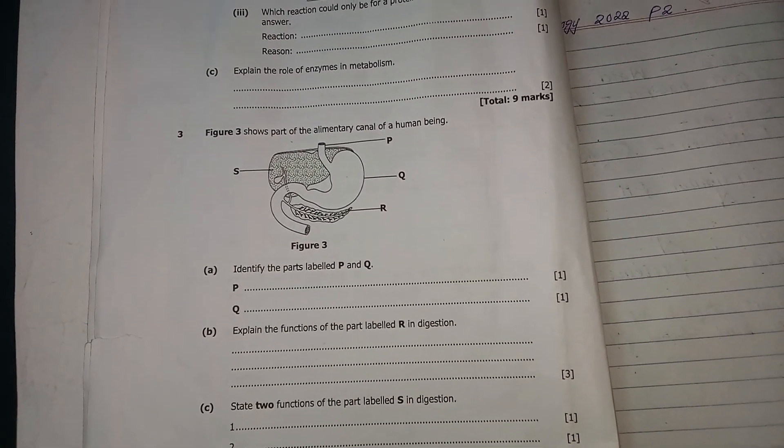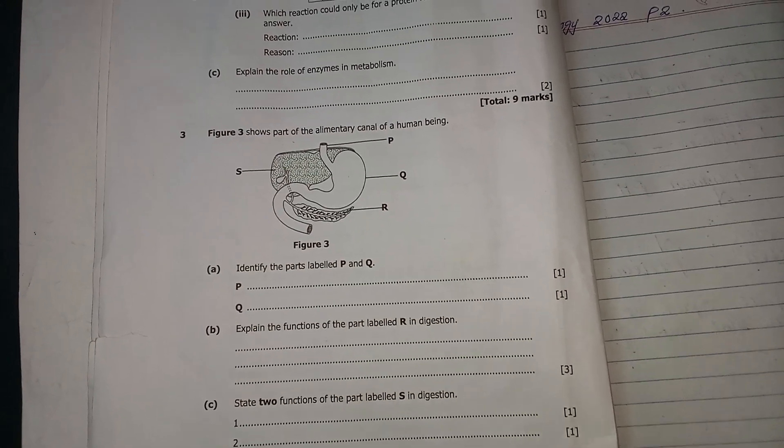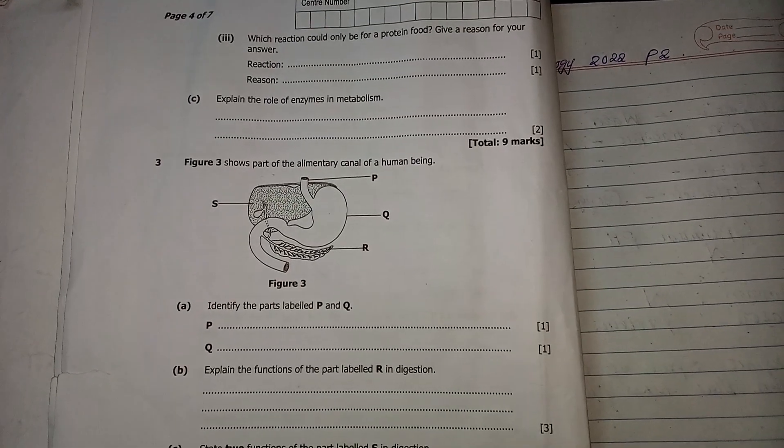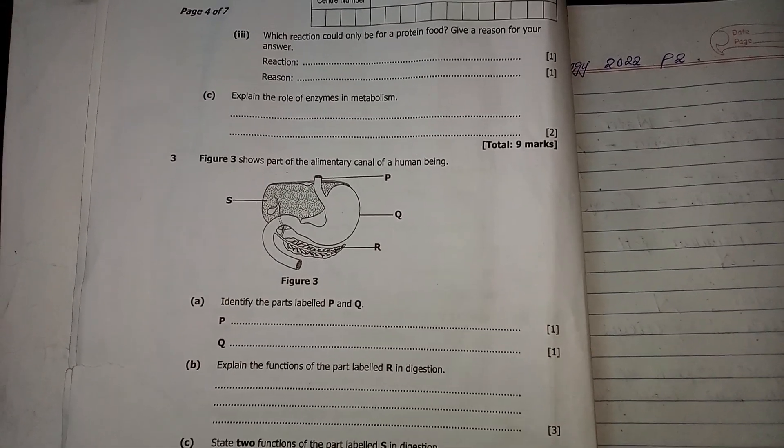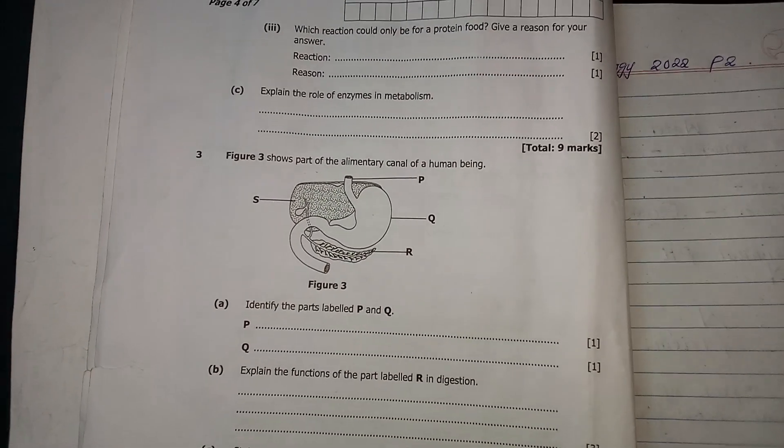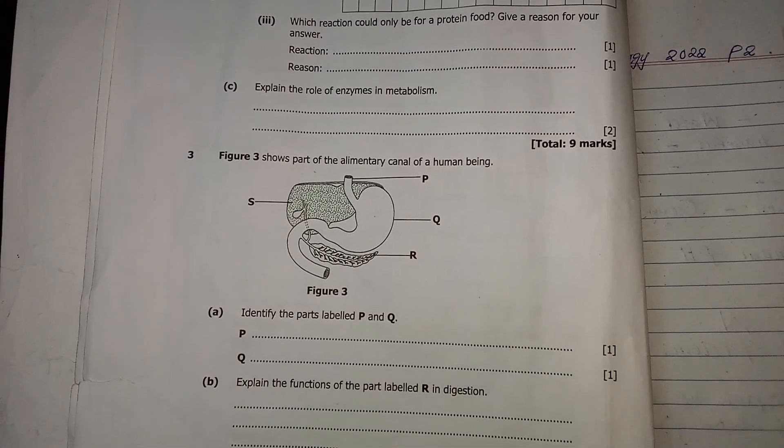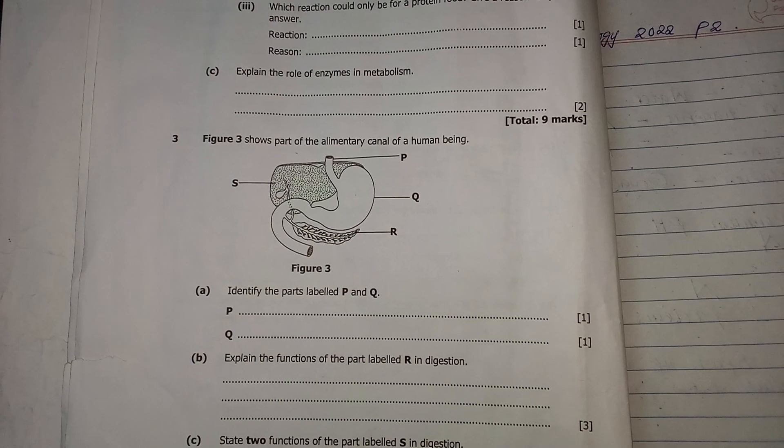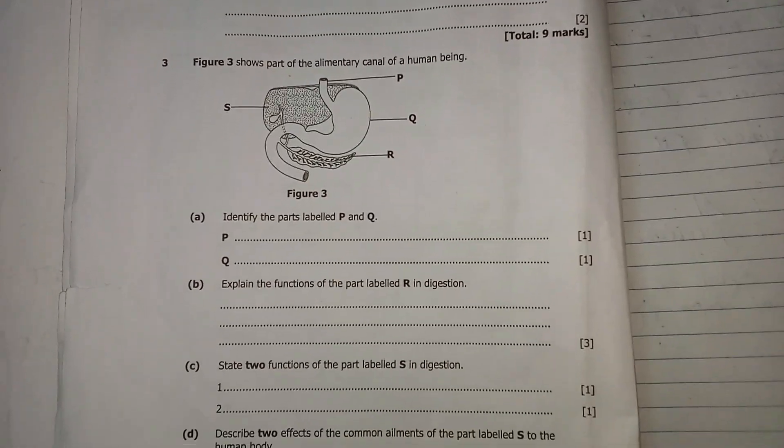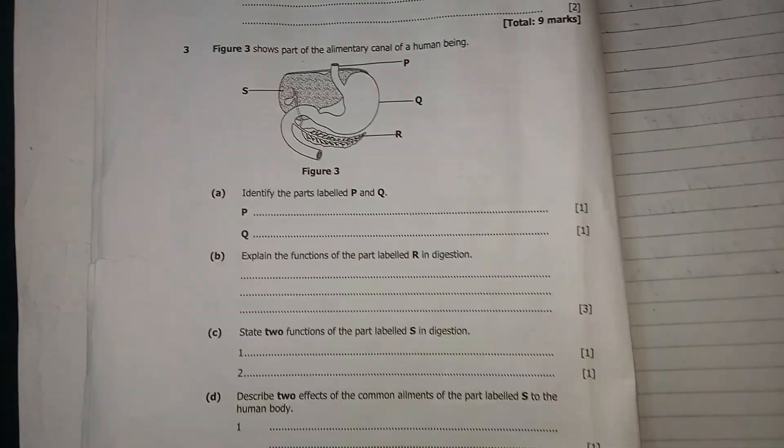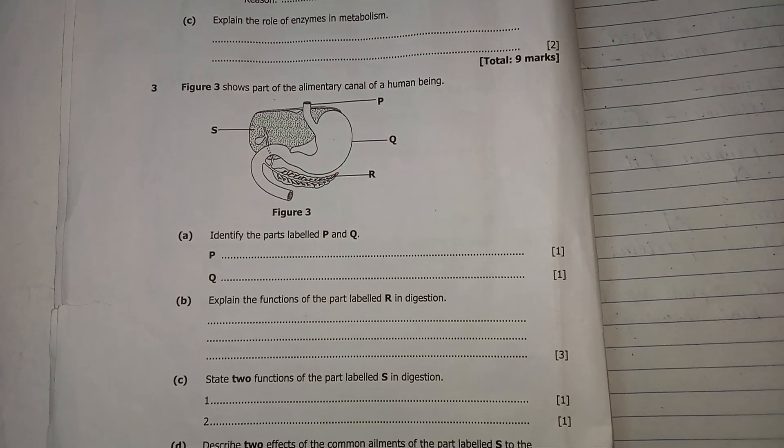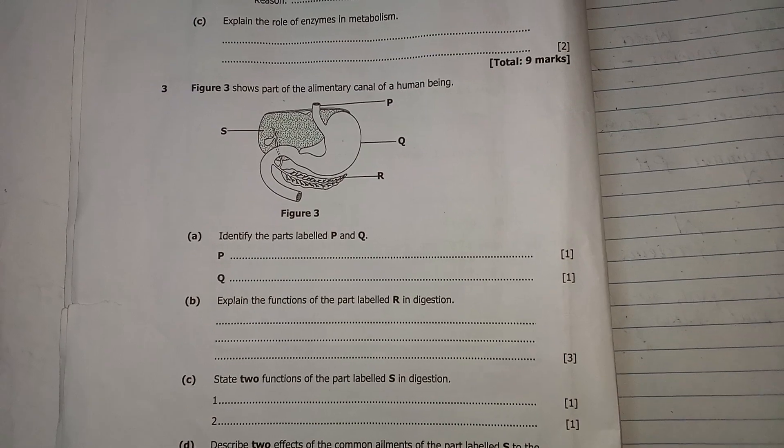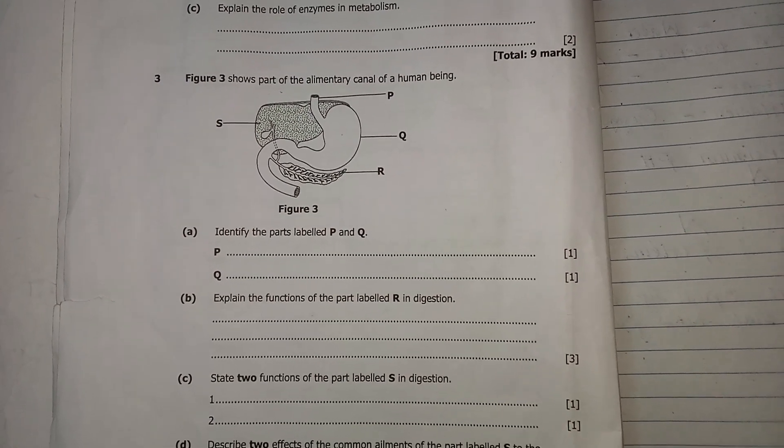Question 3 says, figure 3 shows part of the alimentary canal of a human being. This is the alimentary canal, or you can also call it the digestive system of a human being. Identify the parts labeled P and Q.